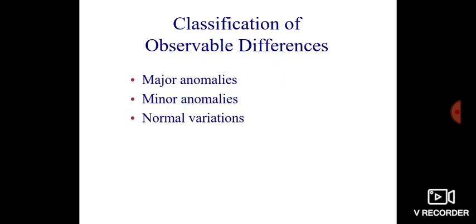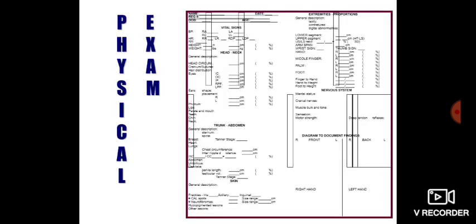Birth defects can be classified as major anomalies, minor anomalies, and normal variation. It's important to do a detailed head-to-toe examination to detect the various anomalies in a baby.